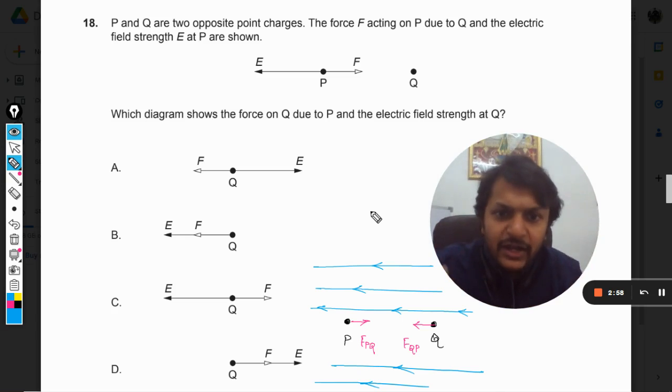So if you are having that kind of a graph here, that only means that it is a uniform electric field. So the value of E is same at all the points in the space. So at Q, the electric field is this.